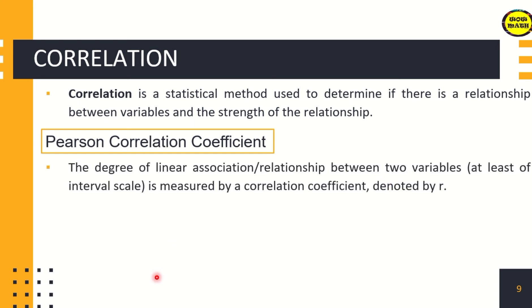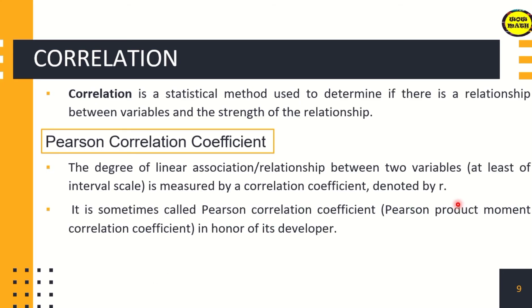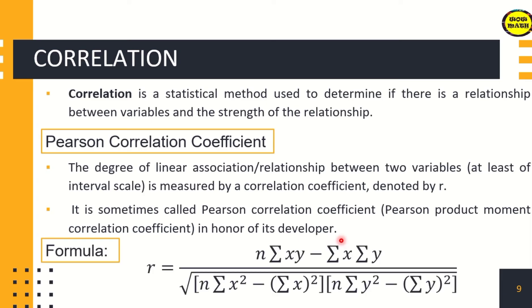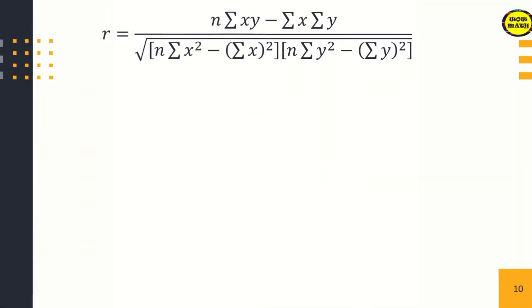The degree of linear association or relationship between two variables, at least of interval scale, is measured by a correlation coefficient denoted by r. It is sometimes called Pearson correlation coefficient or Pearson product moment correlation coefficient, in honor of its developer. This is the formula we are going to use. On the next slide we'll go through it step by step.